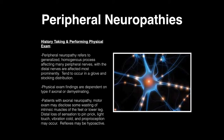I want to switch gears and talk about peripheral neuropathies. Peripheral neuropathy refers to a generalized, homogeneous process affecting many peripheral nerves, with the distal nerves being most prominently affected. These tend to occur in a glove-like or stocking-like distribution. Physical exam findings are dependent on whether the process is axonal or demyelinating.